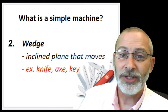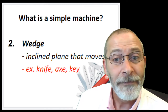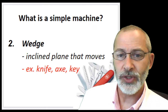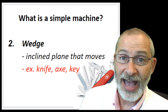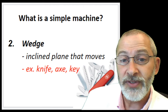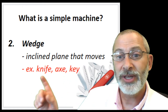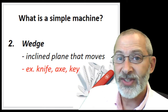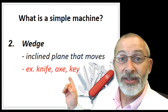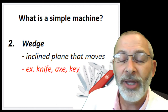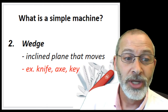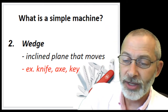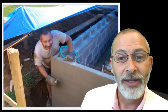Hopefully you came up with some good ideas. Here are a couple of other examples: a knife, an axe, and a key — all examples of wedges, or inclined planes. A flat, slanted surface that moves. Think about that in the case of all three: a knife, an axe, a key — all flat, slanted surfaces or combinations of flat, slanted surfaces that move to accomplish some task. I'm going to show you a wedge in the next picture — see if you can identify where the wedge is.